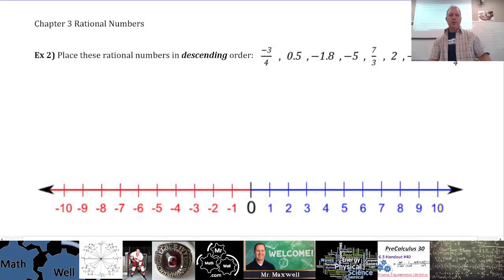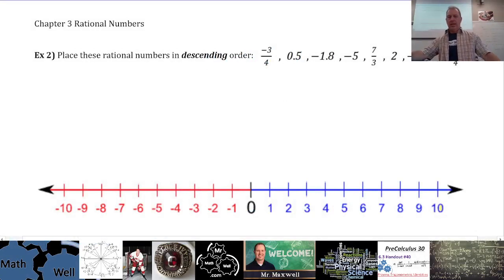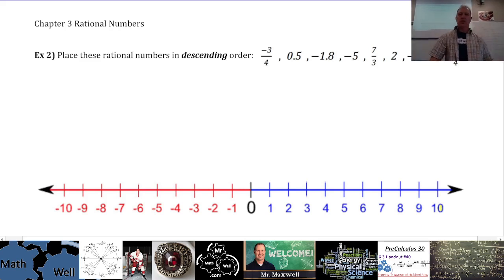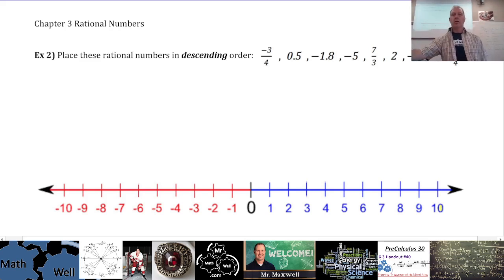All right, so here's part 2 of 3.1. This is where we left off yesterday, so let's just pick up the lesson as we finished yesterday. This example 2 is talking about rational numbers, and we're going to place them in descending order.